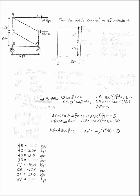Find the loads carried in all the members of the truss. The first thing I'm going to do is draw a free body diagram that has all of the external loads on it. So I've got the 12 and the 18.